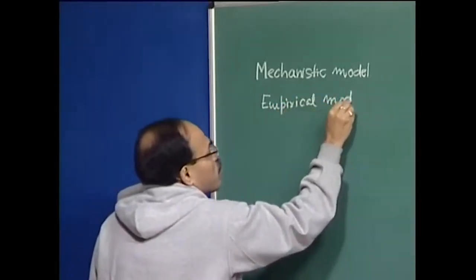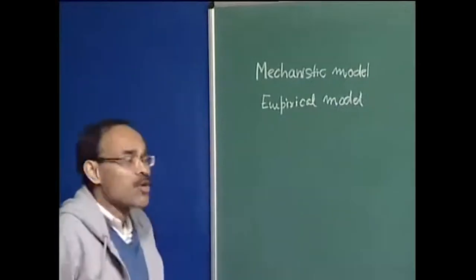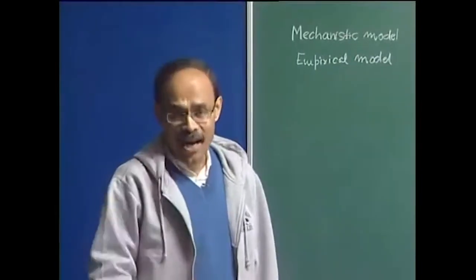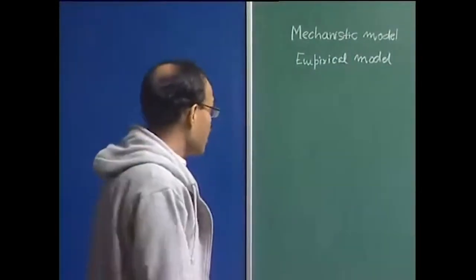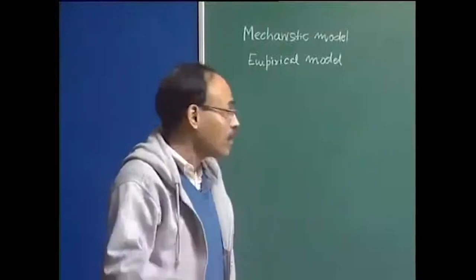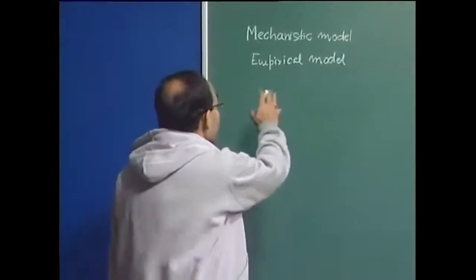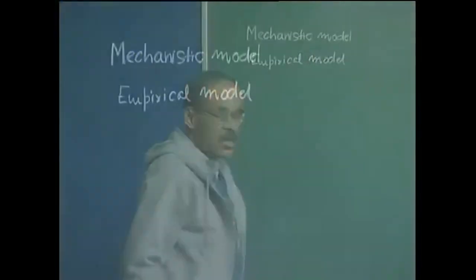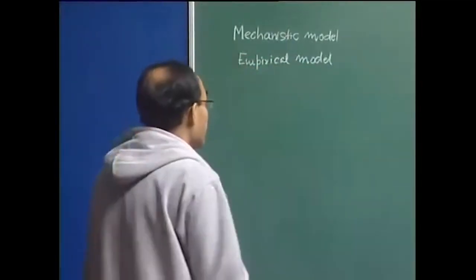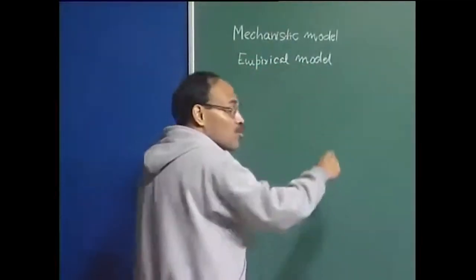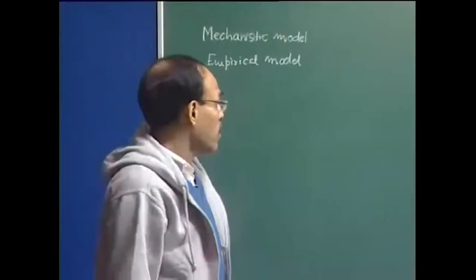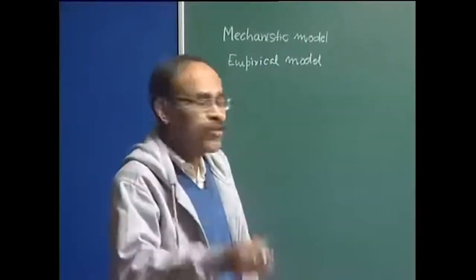There are many subdivisions which may be possible. For example, I can classify empirical models based on the standpoint from which an empirical model has been derived. I can derive an empirical model purely based on regression analysis, or based on dimensional reasoning or dimensional analysis together with experimental data. Finally, I can derive the empirical model from the viewpoint of an artificial intelligence analysis procedure, such as genetic algorithms or artificial neural nets.